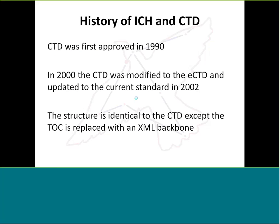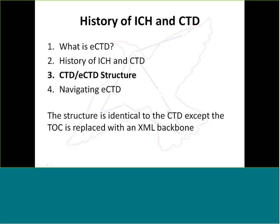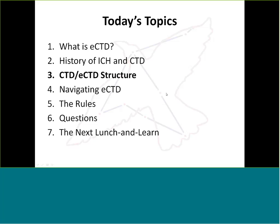CTD is almost 25 years old now. It was originally intended to be paper, and you can still use that format for paper. But as things became electronic — in the 90s with the internet and email — they realized they needed a way to submit data electronically. So they looked at the CTD format and essentially eliminated the paper table of contents and put an electronic one in its place. The overall structure was identical to the CTD, but now you have what's called an XML backbone. This XML backbone is really the critical part of an eCTD.